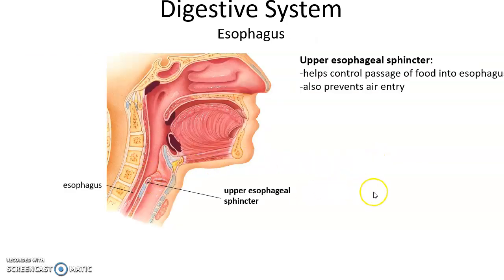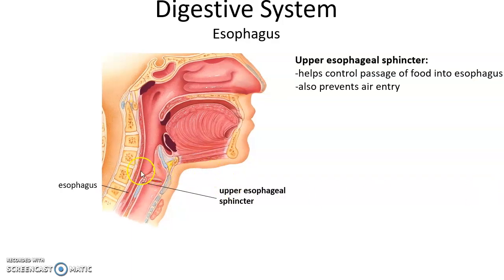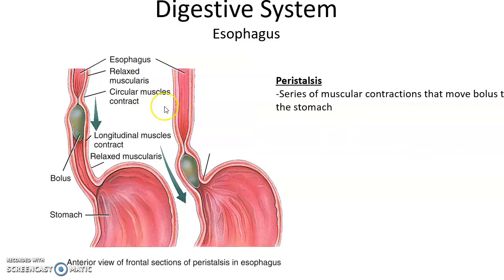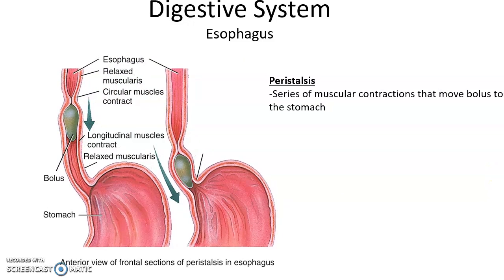There is an upper esophageal sphincter, which helps to control the passage of food into the esophagus and prevents air from entering the esophagus when we're not swallowing. The bolus is moved down the esophagus through a series of muscular contractions called peristalsis, which push the bolus down the esophagus and through the stomach. Gravity is not involved, so you could stand on your head and still swallow food.